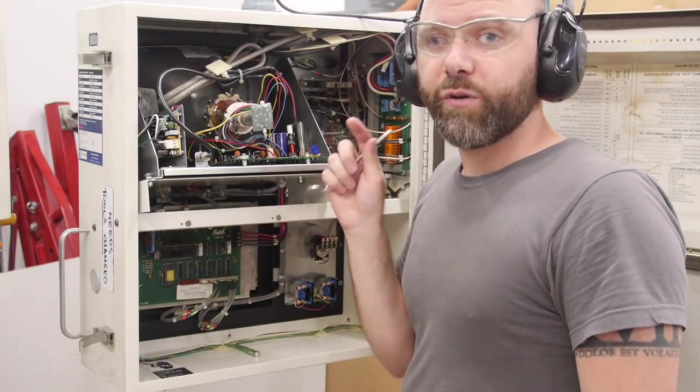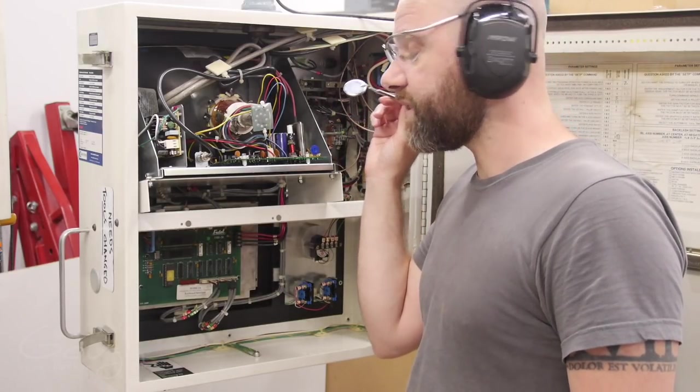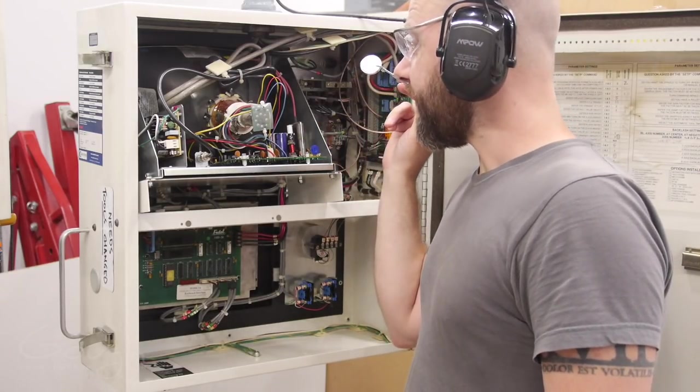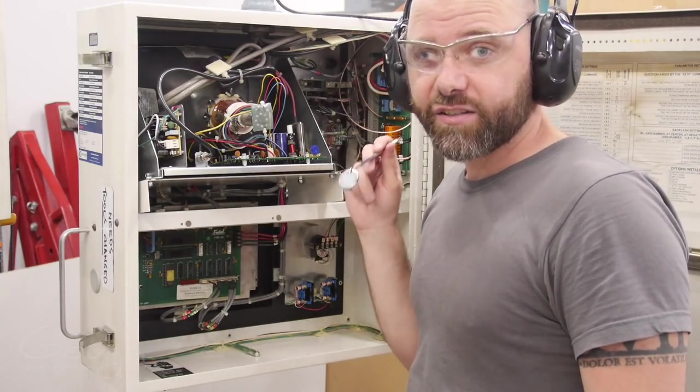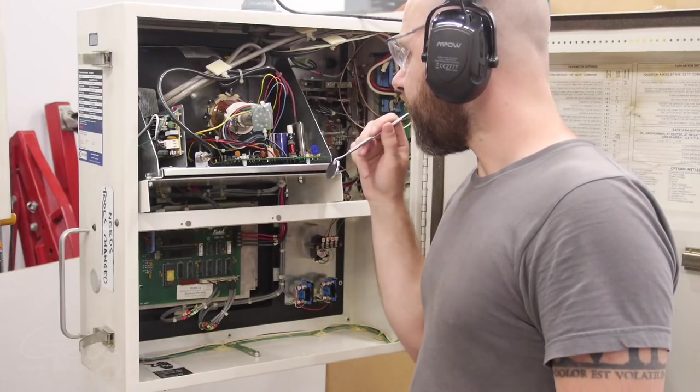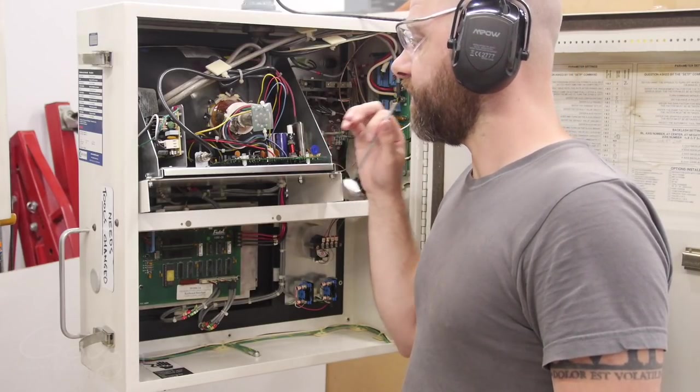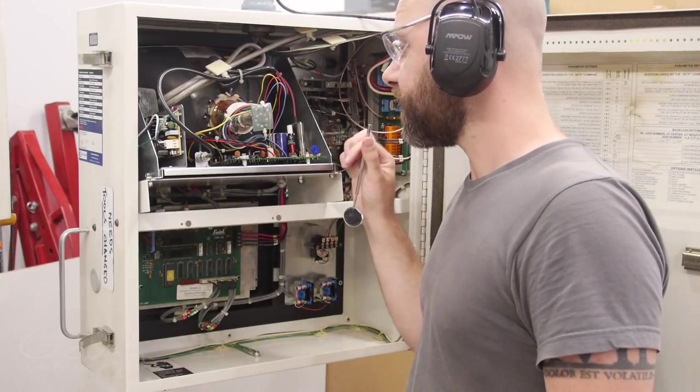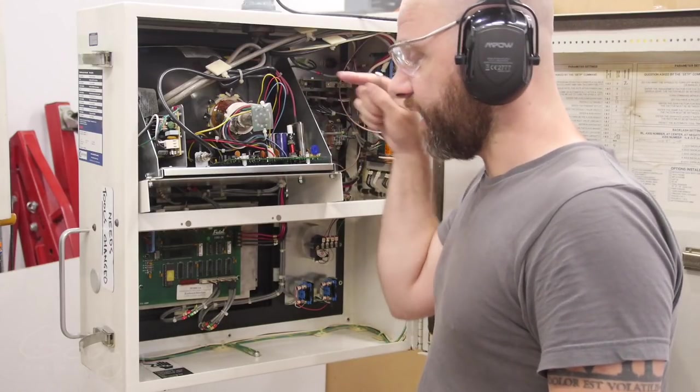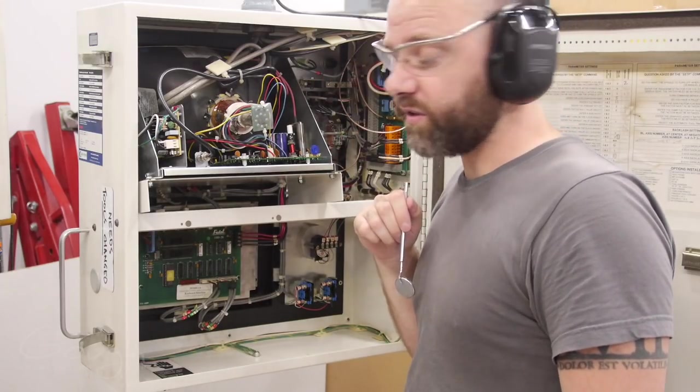One thing that's worth noting when you're dealing with a CRT monitor like this is that they can retain substantial high voltage even after they've been disconnected for days or weeks. Most of the time they should have a discharge resistor across the main capacitors, but that doesn't really matter. Just don't go sticking your fingers in unless you're sure that it's all discharged.